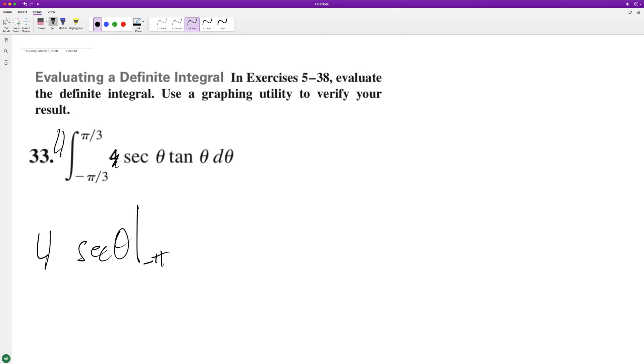Secant is the same thing as one over cosine, so it's kind of like r over x. So what we'll have here is four is on the outside here in the secant of pi over three minus the secant of negative pi over three.